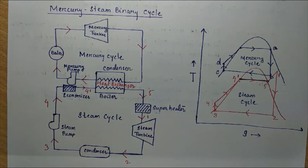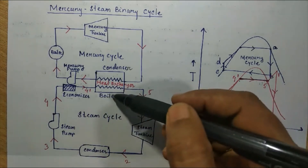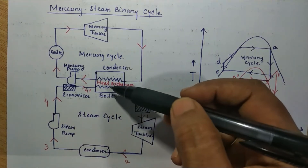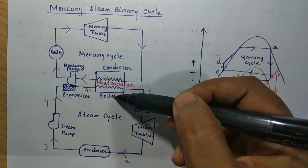Since this is the steam cycle, water is the working fluid. The economizer preheats the water by gathering heat from the surroundings — that is, from flue gases from the chimney. In general, it preheats the liquid water before it enters the boiler. In the boiler, the heat energy added is that which was rejected by the condenser of the mercury cycle and absorbed by the boiler.